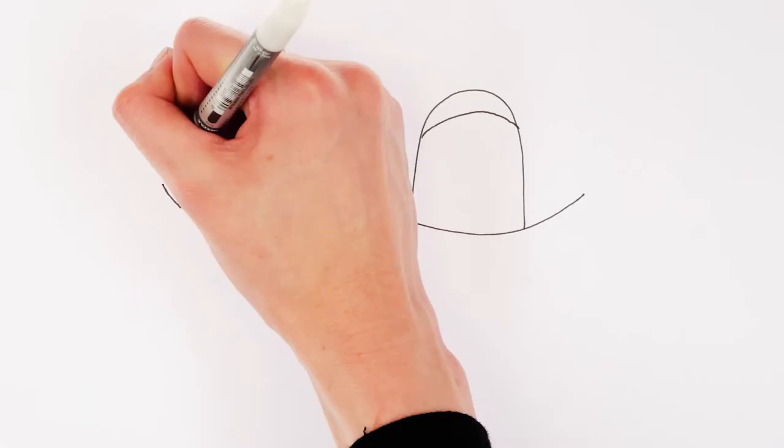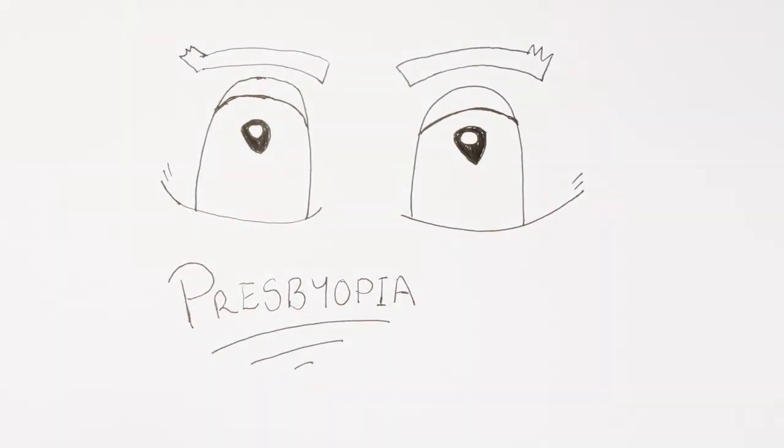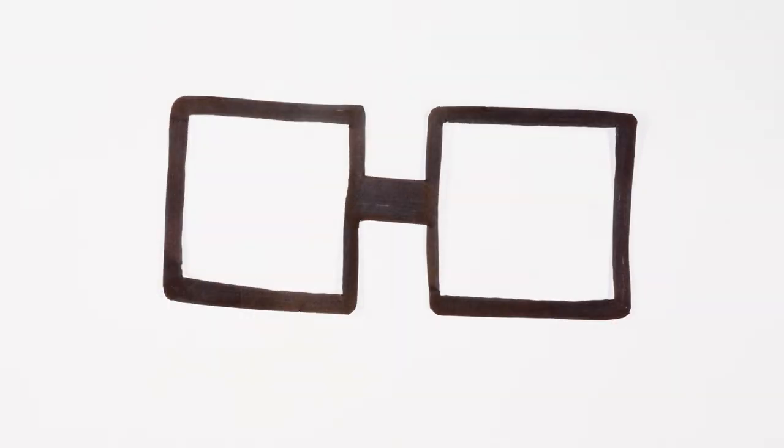The crystalline lens and the ciliary muscle undergo changes when we age. These changes lead to a condition known as presbyopia. Presbyopia is the age-related progressive loss of accommodation ability that happens to everyone, so we need to place things farther away from us or use reading glasses.